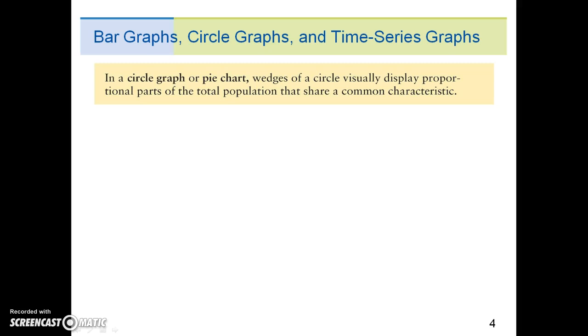In a circle graph or pie chart, wedges of a circle visually display proportional parts of the total population that share a common characteristic. It is relatively safe from misinterpretation and is especially useful for showing the division of a total quantity into its component parts.